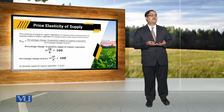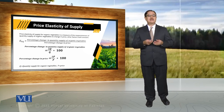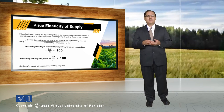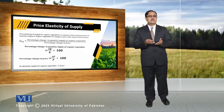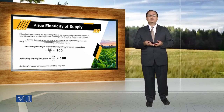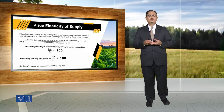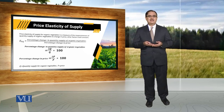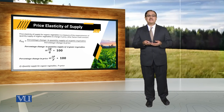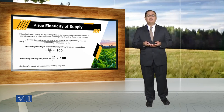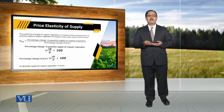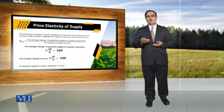When we make discussion about the price elasticity of supply, it refers to percentage change in quantity supplied because of percentage change in price of that particular commodity. If I replicate this concept with reference to supply of organic vegetables, percentage change in quantity supply and percentage change in price is always calculated with reference to some point of reference.